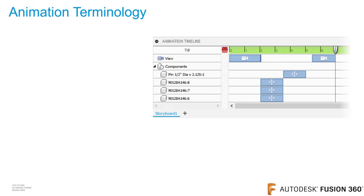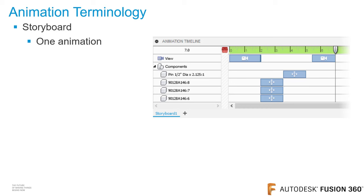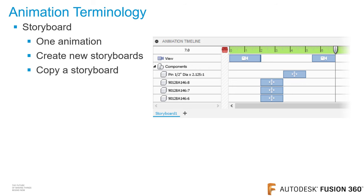I want to go over some terminology. When you enter the animation workspace, at the lower left-hand corner of your screen is the storyboard area. The storyboard contains all the information for one animation. By clicking on the plus symbol, you can create a new storyboard. You can also copy a storyboard and reverse a storyboard. Usually the first storyboard you create shows how the components will be disassembled. You can copy that storyboard and reverse it to show how the components will be assembled.